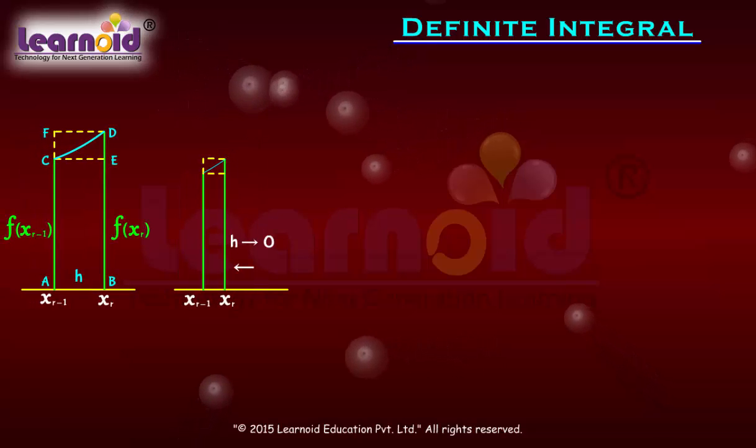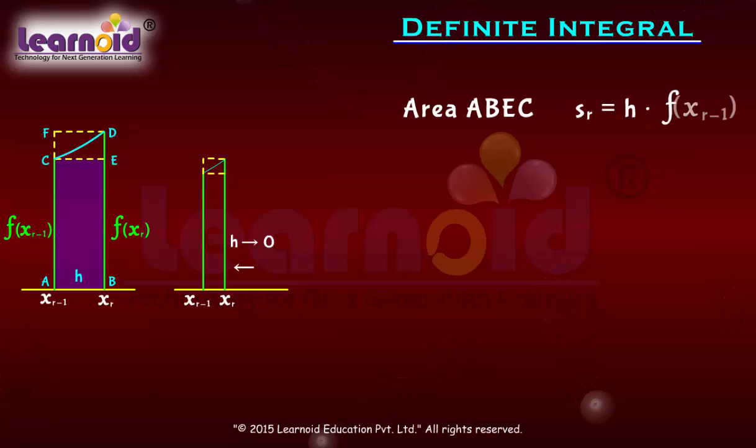sₙ denotes area of lower rectangle and Sₙ denotes area of upper rectangle. Area ABEC denoted by sᵣ is h · f(xᵣ₋₁). Area ABDF denoted by Sᵣ is h times the value of function at xᵣ, i.e., f(xᵣ).